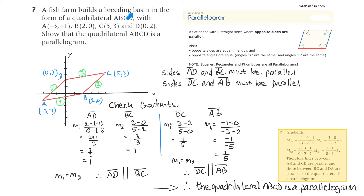Question 7: a fish farm builds a breeding basin in the form of quadrilateral ABCD with given coordinate points for A, B, C, and D. Show that quadrilateral ABCD is a parallelogram. Plotting the points suggests it looks like a parallelogram. We need to confirm that sides AD and BC have equal gradients and that sides DC and AB have equal gradients.